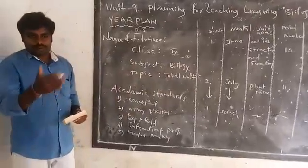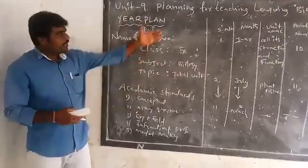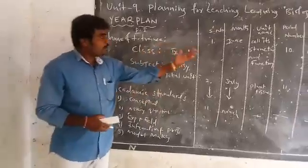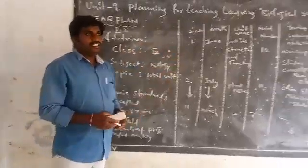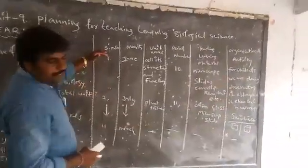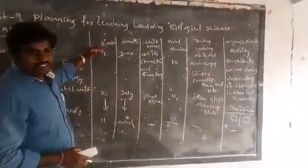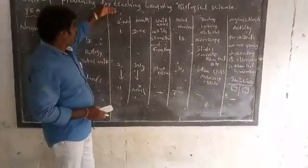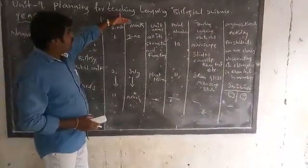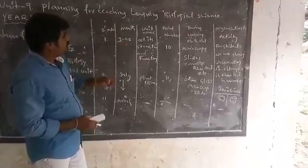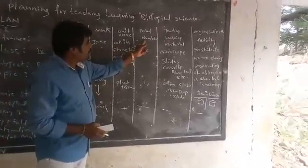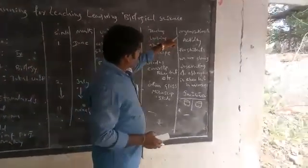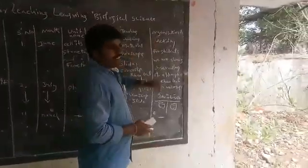You can see the format of the year plan like a book. The format is very important. The columns include: Serial Number, Month, Unit Name, Period Number, Teaching Learning Material, and Organization of Activity.